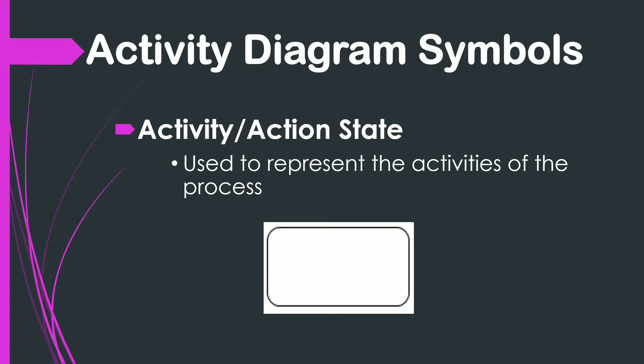The second one is the Action or Activity State. It is a step in which the user or software performs a certain task. It represents an action that is going to take place at this stage of the software system, generally depicted with a rounded edge rectangle.